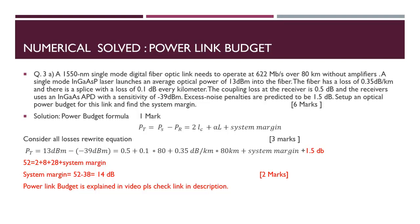Excess noise penalties are predicted to be 1.5 dB. For this setup, we have to find the system margin using an optical power budget for this link. If you don't know the power budget formula, the explanation is already shared on my channel — please refer to that video before solving this. The formula is: Pt = Ps − Pr = 2×Lc (coupling loss) + attenuation × length of fiber (alpha × L) + system margin.